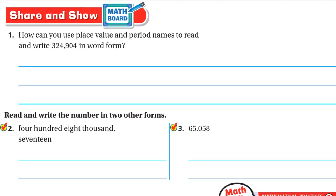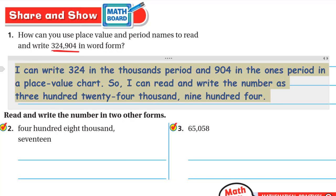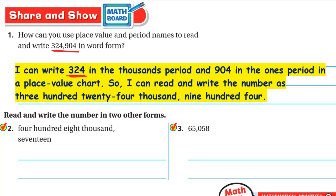Share and show: how can you use place value and period names to read and write this number in word form? In the thousands period we have 324, and in the ones period we have 904. I can read and write the number as: three hundred twenty-four thousand — write the comma — then nine hundred four.